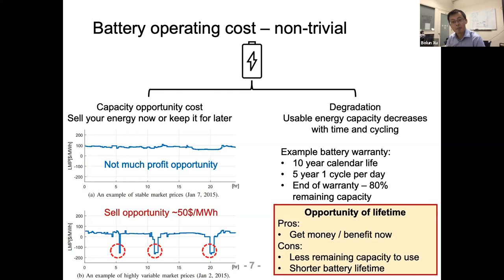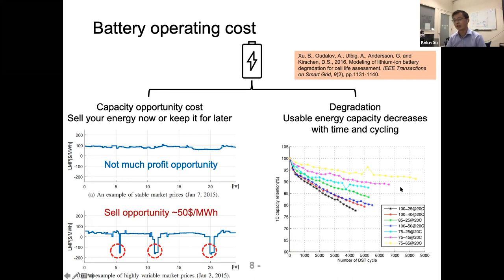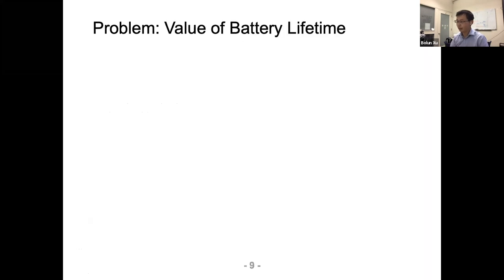How does degradation impact economic decisions? It's again an opportunity trade-off: if I cycle my battery now I get money now, but the drawback is I have less capacity in the future and a shortened battery lifetime. Battery testing data shows that remaining battery capacity is crucially dependent on how the battery is charged and discharged — highly correlated with battery operation. So we have both capacity opportunity cost and lifetime opportunity cost, and they are correlated.